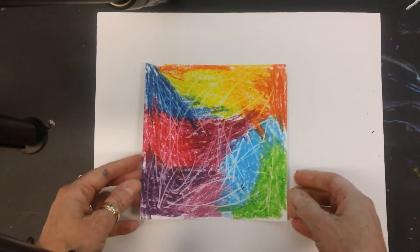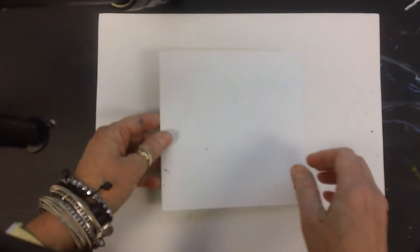Alright, so the next part we're going to flip it over and we're going to be drawing a heart on the back because we're going to be cutting out a heart shape. Now there's a couple ways to do this.